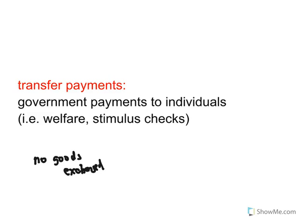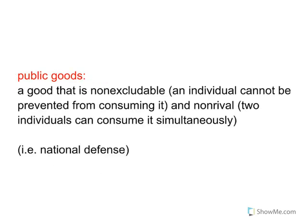Before we get to the circular flow model, I want to talk about public goods. Public goods are goods that are non-excludable and non-rival. These two key terms — non-excludable and non-rival — will come up again in unit 10 when we get to market failure, because public goods pose a certain challenge to societies that produce them.